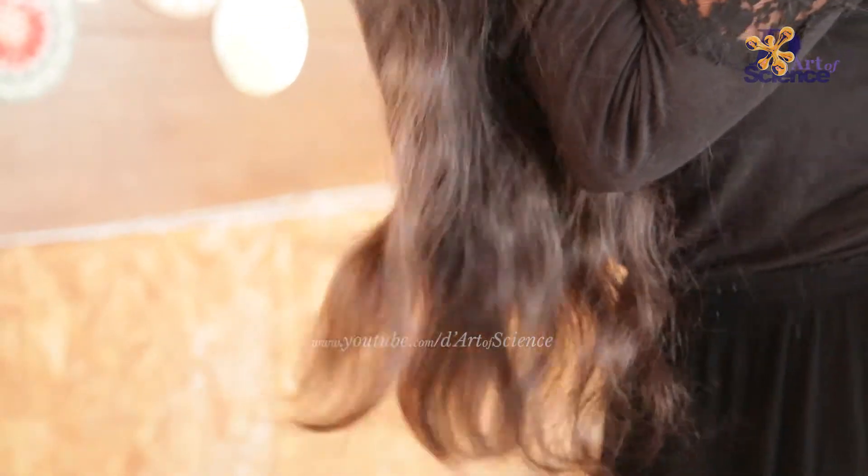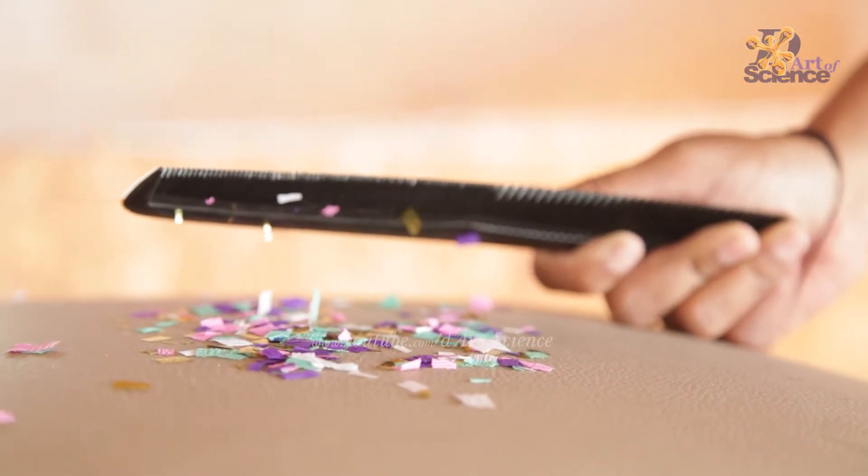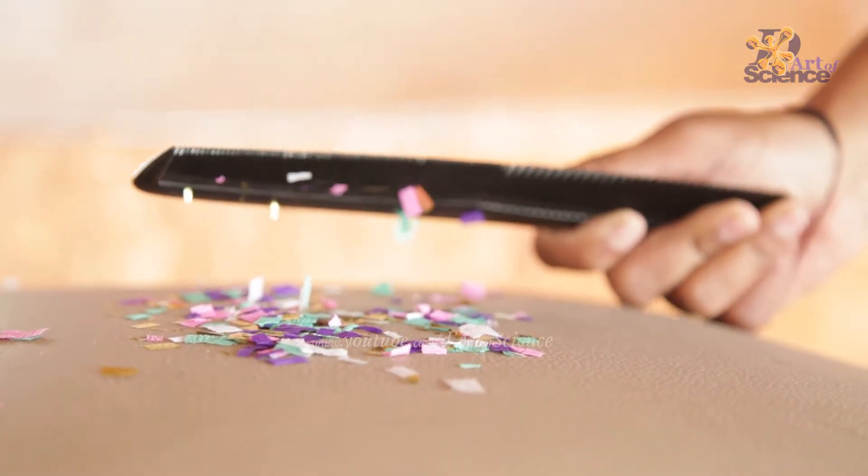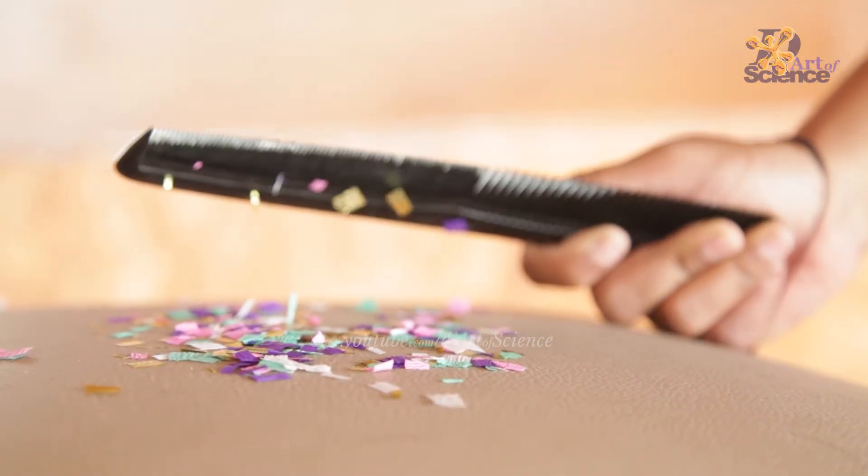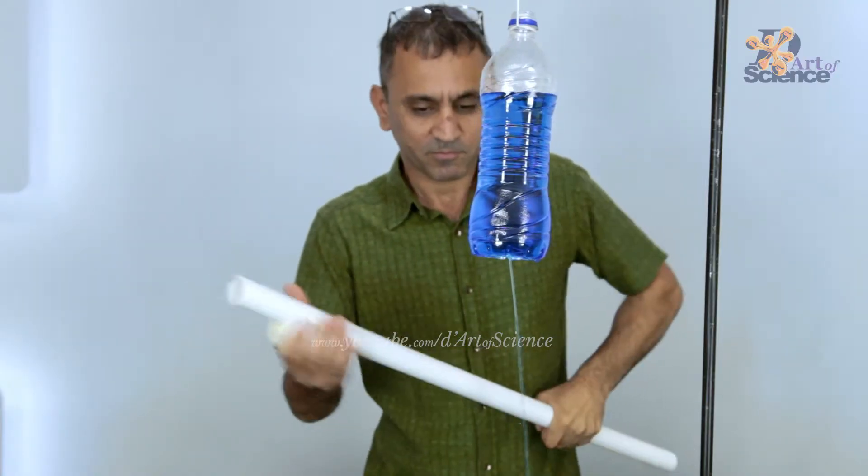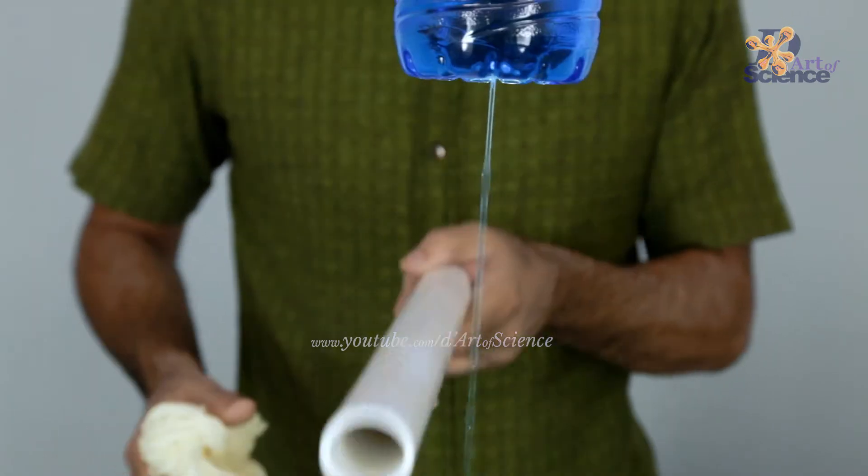Now once again, when the negatively charged comb comes close to an uncharged piece of paper, again an electric induction is created. But this time it repels the electrons of the paper to the other side, leaving the side that is close to the comb with a positive charge and therefore the objects attract each other. In the same way even a negatively charged PVC pipe also attracts a stream of water which otherwise has a neutral charge.